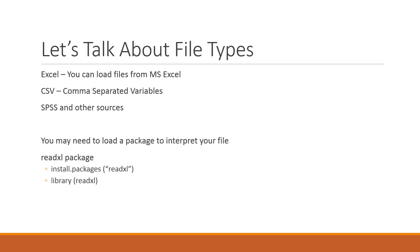Let's talk about file types. You can load data from Excel, CSV comma-separated variables, SPSS, and other formats. Many applications allow you to export data to CSV or Excel format, which you can then load into R. When loading Excel files, you need a package called ReadXL. If you're using R or RStudio for the first time, you may need to install it using install.packages("readxl"). That's your Excel reader — it interprets Excel's special characters and moves the data into R.